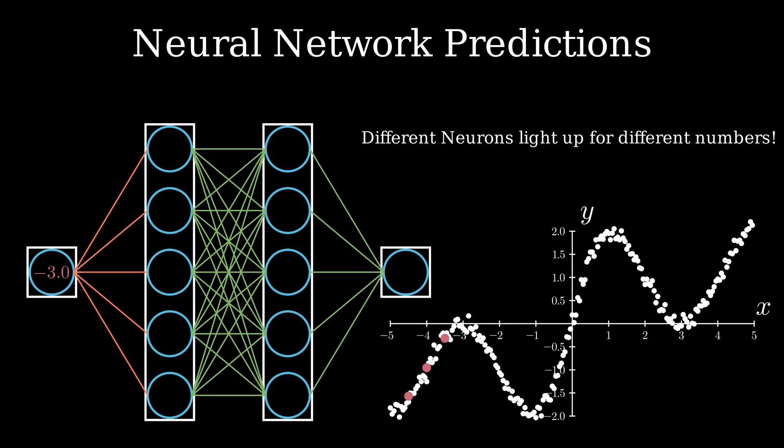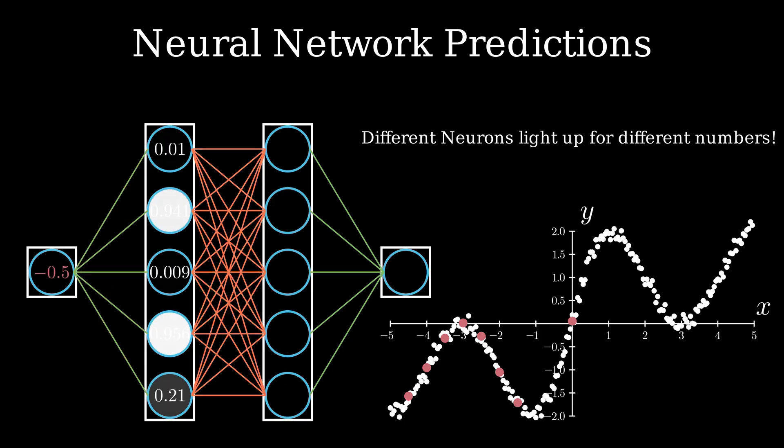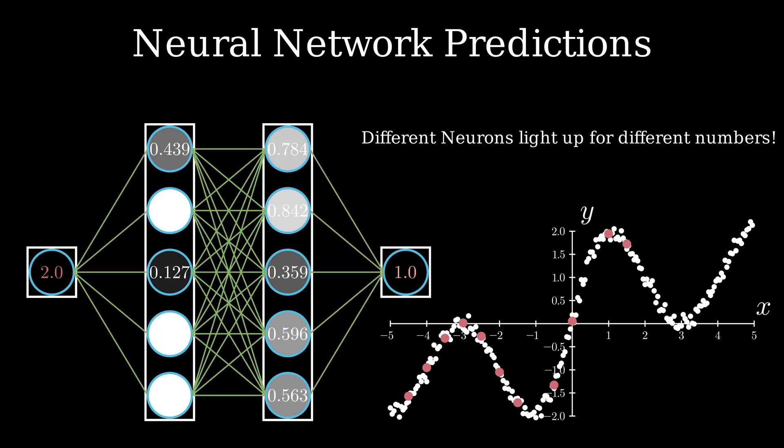I will run through several more examples and you can see how neurons are activated in each case. This is how neural networks make predictions. They have mapped each input to a set of neurons and the greater the number of neurons, the more combinations the network can generate. Consequently, deep neural networks are well equipped to tackle highly complex tasks such as image recognition for self-driving cars.